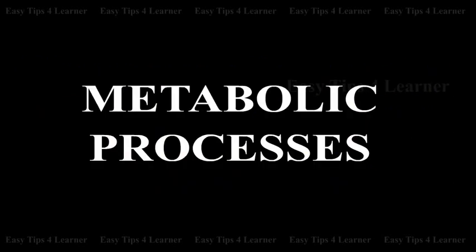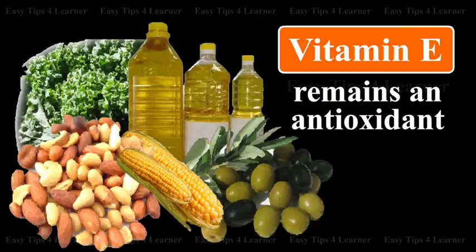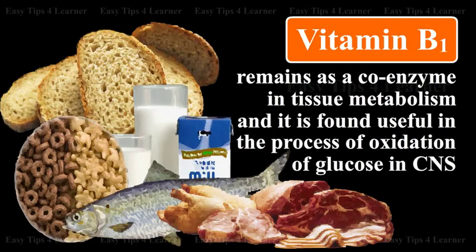Metabolic processes: The process of calcium and phosphorus metabolism happens due to the presence of vitamin D. Vitamin E remains an antioxidant. Vitamin B1 remains as a coenzyme in tissue metabolism and it is found useful in the process of oxidation of glucose in the CNS.